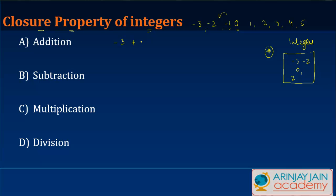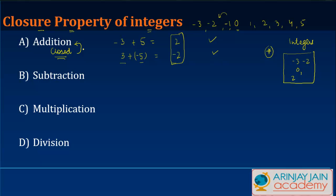If the result is outside the box, we say that the integers are not closed for that operation. Let's talk about addition first. If I add −3 + 5, the answer is 2, which is an integer. If I add 3 + (−5), I get −2, which is also an integer. In both these cases, and similarly for as many cases as you want, the answer is always going to be an integer. So we say that the integers are closed under addition.